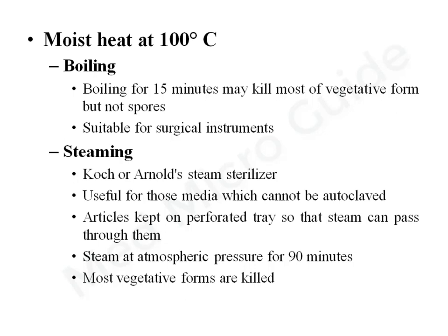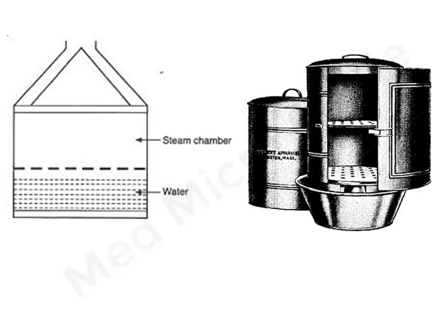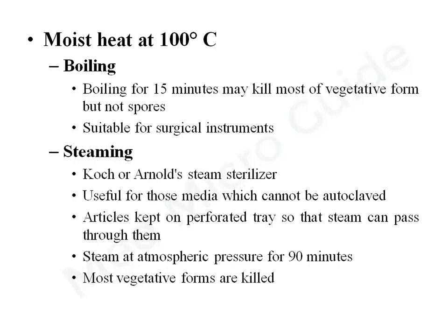Steaming is a process done in a Koch or Arnold steam sterilizer, which is a cylindrical instrument with a lid on top. It has a porous plate on which articles are kept for sterilization. At the bottom there is an electrical coil, and water is poured just above the coil. When the water starts boiling, steam circulates around the load and condenses to release latent heat onto the article. Steaming is done for 90 minutes at atmospheric pressure.